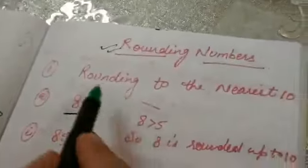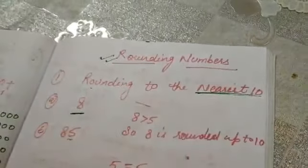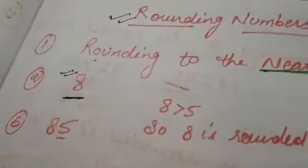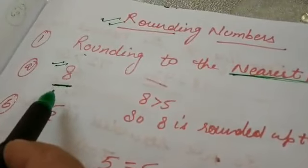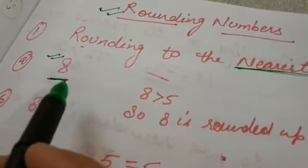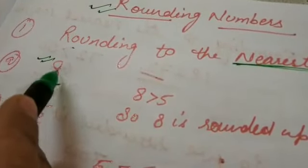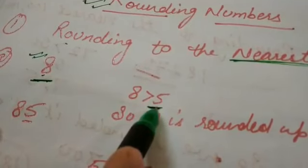We are going to start rounding to the nearest 10. Suppose you have 8. How can you round it off? You can round it to 0 or to 10. But the right way is if the one's place number is more than 5, then we round up.